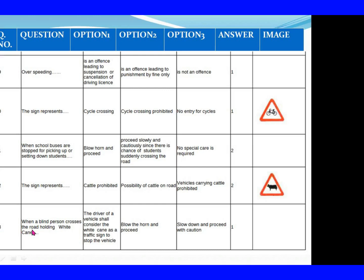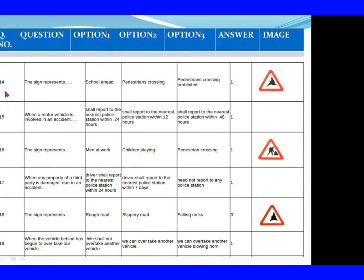Question 113: When a blind person crosses the road holding a white cane. Option 1: The driver of a vehicle shall consider the white cane as a traffic sign to stop the vehicle. Question 114: The sign represents. Option 1: School ahead. Option 2: Pedestrian crossing is prohibited. The right answer is Option 1: School ahead.